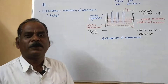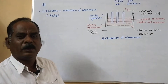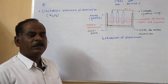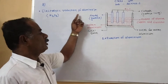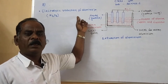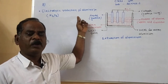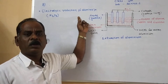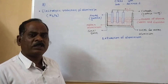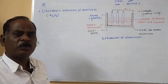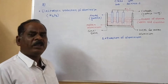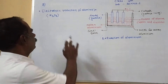The next topic is the electrolytic reduction of alumina. This is the second step involved in the extraction of aluminium from bauxite. In the first step, the concentration of bauxite takes place by Hull process or Bayer process. In both processes, the last product obtained is dried alumina.